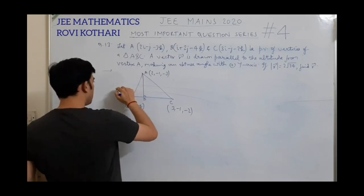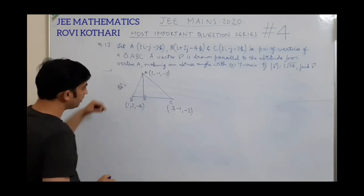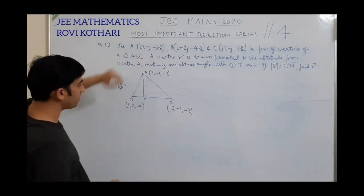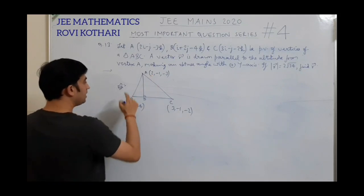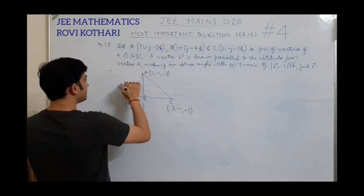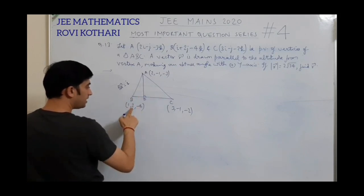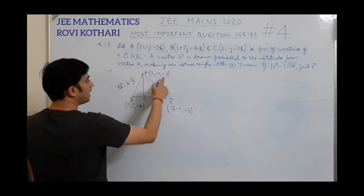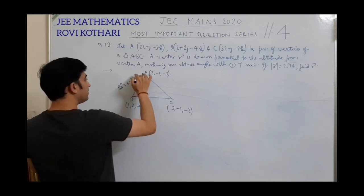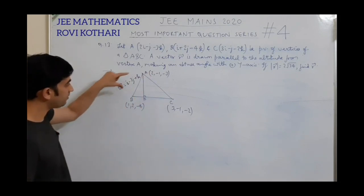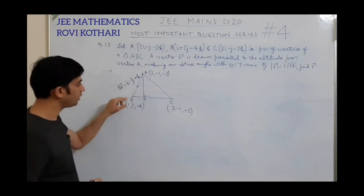Let us first find out vector BA. BA will be position vector of A minus position vector of B. So what does this vector come out to be? 2i minus i is i, minus j minus 2j is minus 3j, and minus 3k minus (minus 4k) becomes plus k. So vector BA is i minus 3j plus k.